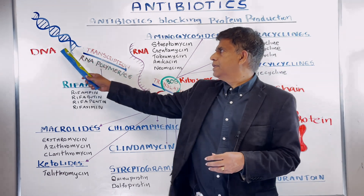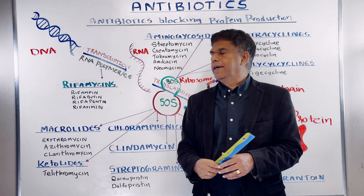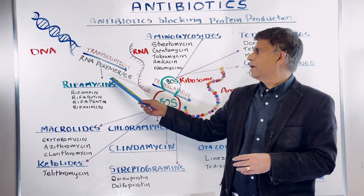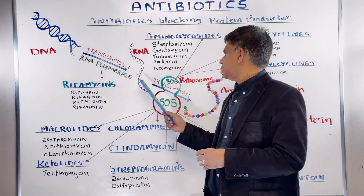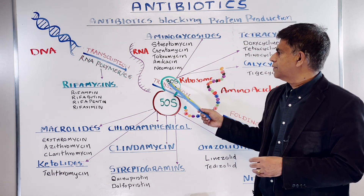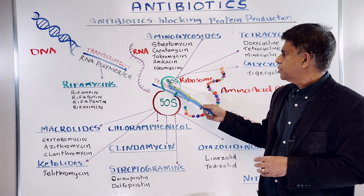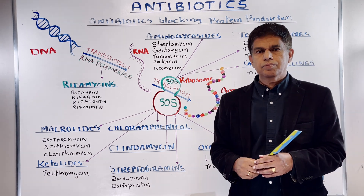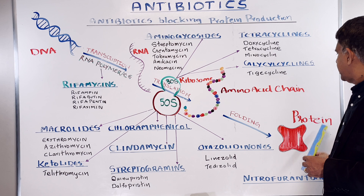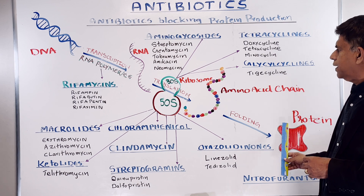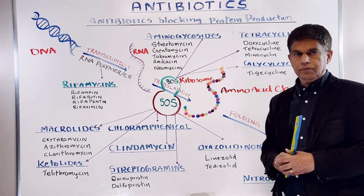Protein production starts with the DNA, and then goes through a process called transcription. There's an important enzyme here: RNA polymerase. Then it comes to translation, which involves the 30S and 50S subunits of ribosomes. And then we have another process called folding. We're going to look at each area and which antibiotic works there.